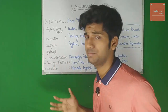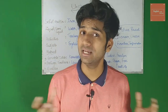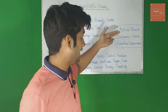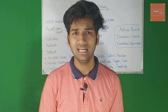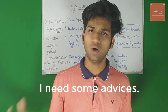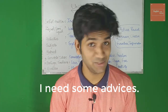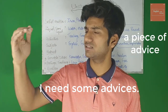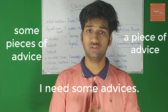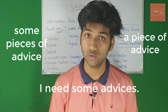The common uncountable nouns we often misuse are: advice, bread, ice cream, cheese, furniture, and information. Let's start with 'advice'. People say 'I need some advices' — you simply can't say that. You can say 'I need a piece of advice' or 'I need some pieces of advice', but you cannot say 'I need some advices'. If you say that, you're wrong.